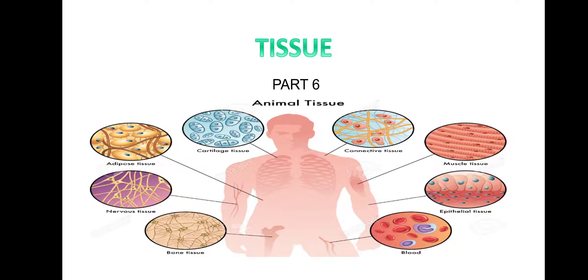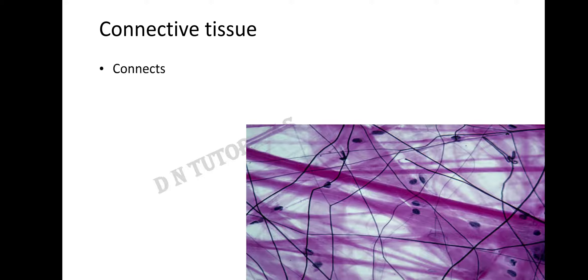Hello students. In this lecture we will be learning about the connective tissue. Connective tissue connects the different parts of our body. It holds the tissues present inside our body together. Connective tissue is the most abundant tissue present in our body. When we learn about the examples of connective tissue, you will slowly come to know how abundant this tissue is.